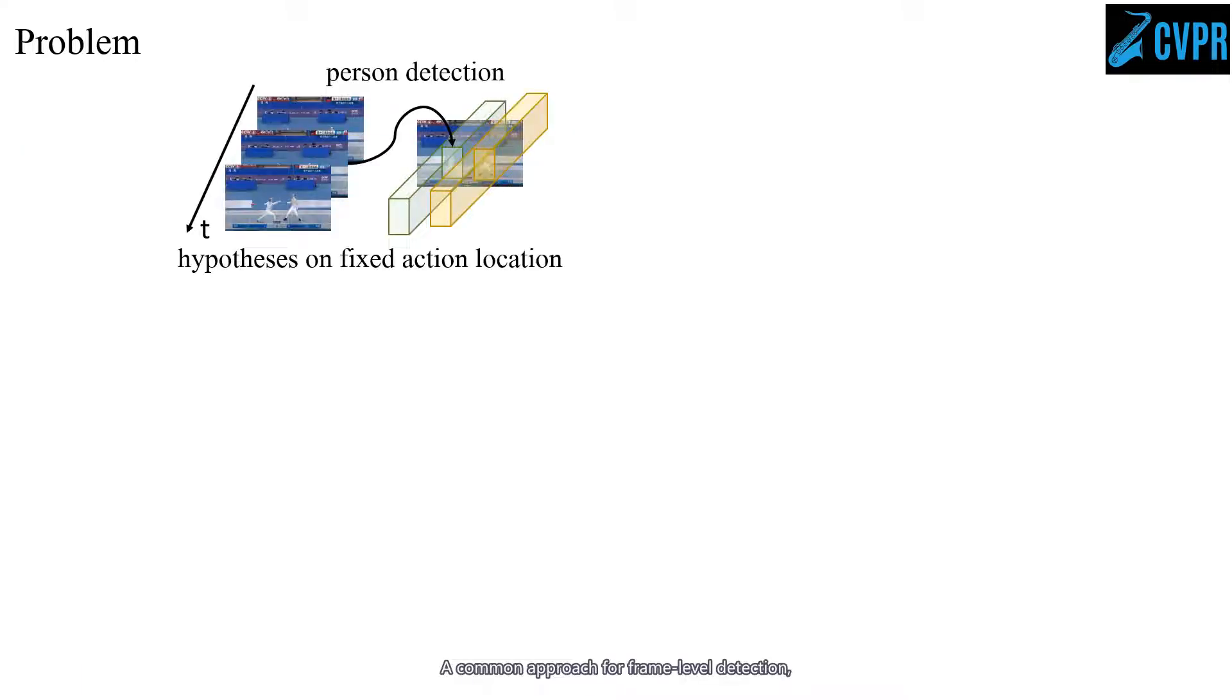A common approach for frame-level detection relies on first detecting actor bounding boxes on each keyframe, then duplicates the bounding boxes along time to perform ROI pooling over time to generate spatial-temporal features for recognizing actions.